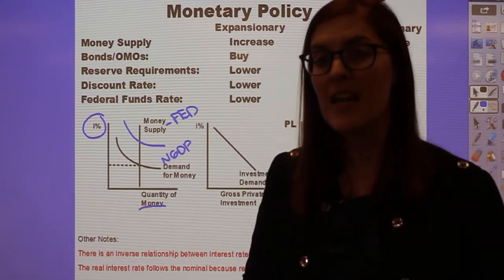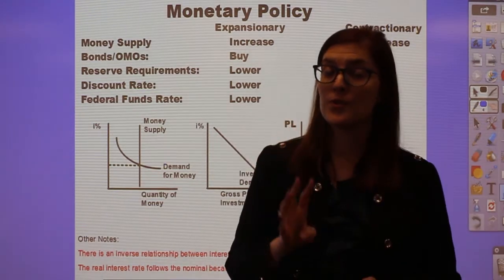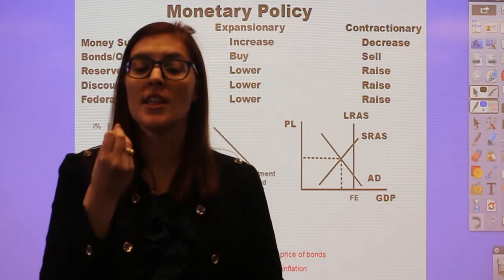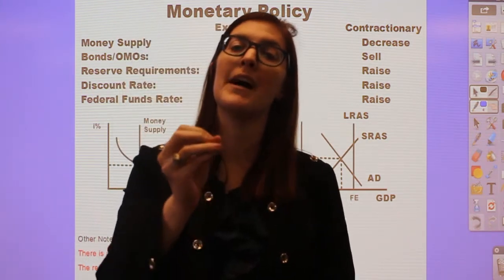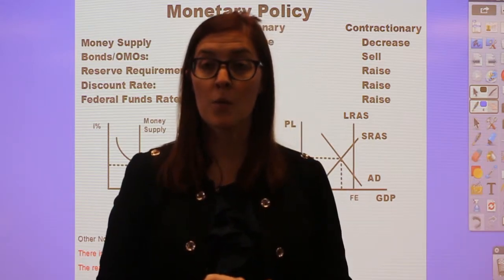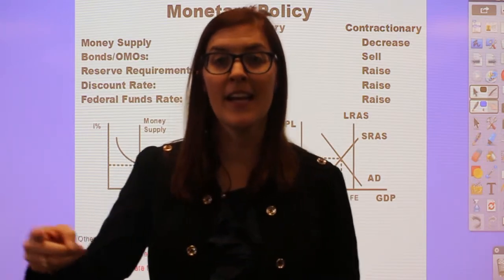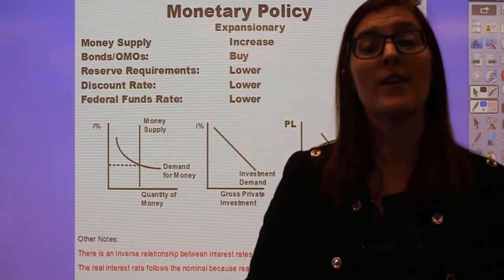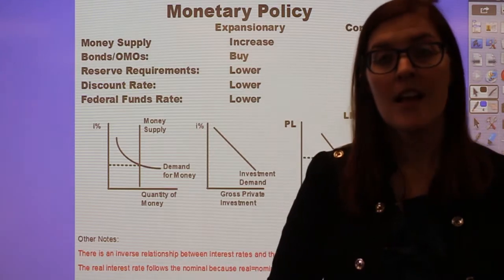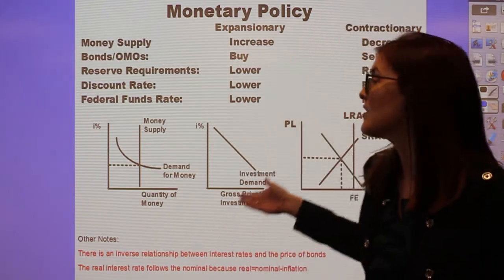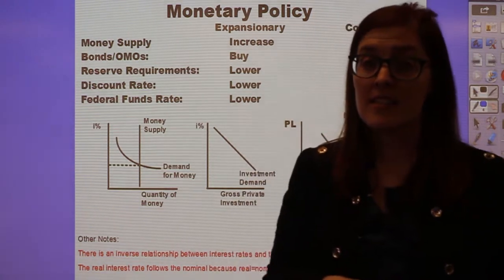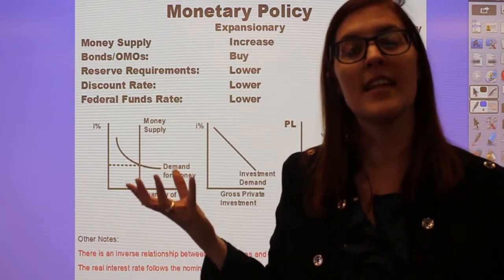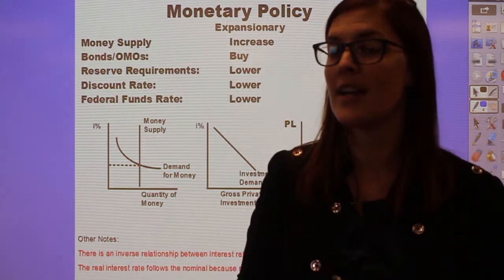Mostly the money market graph is used to show monetary policy. The Fed has two main tools to change the money supply. The first is open market operations — buying or selling bonds, also called government securities. If the Federal Reserve buys a bond, it loans the government money, putting new money into the economy and increasing the money supply — this is expansionary monetary policy. If the Fed sells bonds, it takes money out of circulation, shrinking the money supply to fight inflation — contractionary monetary policy.